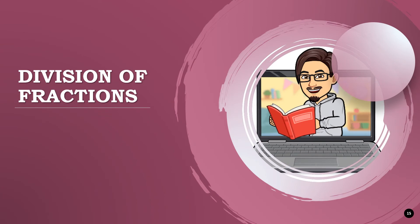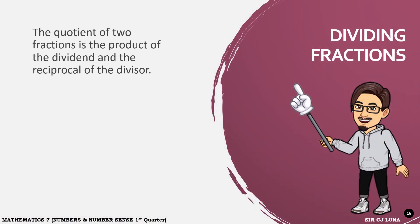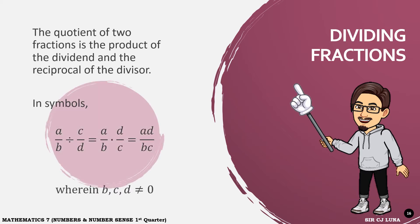Let us now have the last operation for fractions, which is division. The quotient of two fractions is the product of the dividend and the reciprocal of the divisor. So when we are getting the quotient, first we have to get the reciprocal of the divisor, and then proceed to multiplication.